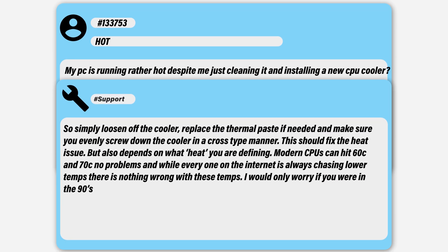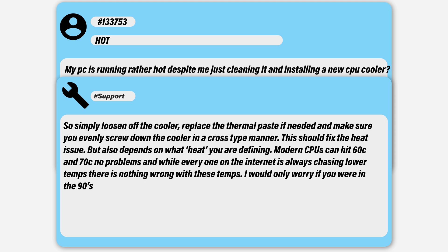I found this on some older Corsair water coolers, where you put it on, everything's tightened down, and then you take it off and half the CPU doesn't even have thermal paste because it didn't even touch. Simply loosen off the CPU cooler, replace the thermal paste if necessary, and tighten it down in a cross-tight pattern — that should fix your problem. Also check your definition of 'running hot,' because most modern CPUs can hit 60 and 70 degrees Celsius with absolutely no damage. I'd really only be worried if we were up in the 80s or 90 degree range.